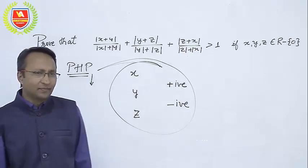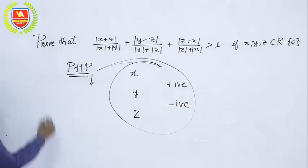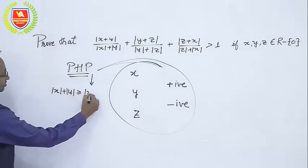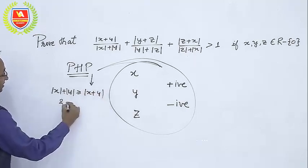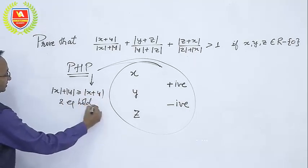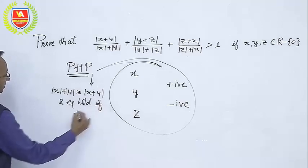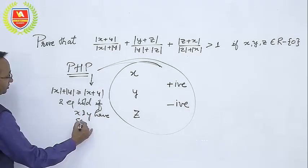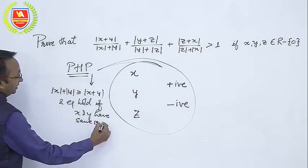At least two of them. And if they both have the same sign, then the basic inequality |x|+|y| ≥ |x+y| holds, and equality occurs when x and y have the same sign - that is, either they both are positive or they both are negative.